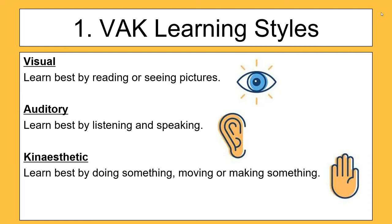The first really famous set of learning styles were the VAK learning styles, with each letter standing for a different style. V is for Visual — people who learn best by reading or seeing pictures. A is for Auditory — people who learn best by listening or speaking. And K is for Kinesthetic — people who learn best by doing something, actually getting involved, moving or making something.